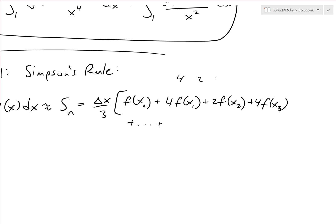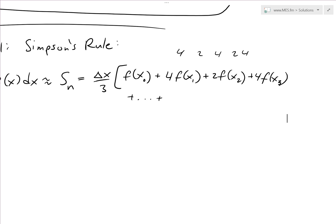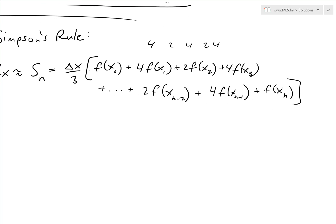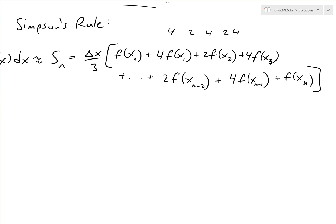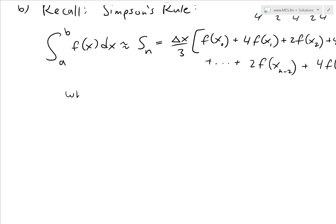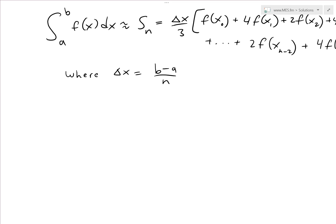So it was 4, 2, 4, 2, 4, 2, etc. It keeps going on and on. So we finally have f(x_{n-2}), plus 4 f(x_{n-1}). Then the last one is just f(x_n). So the first ones are 1 as coefficients. Then we have 4, 2, 4, 2, 4, 2. And then we get 1 at the last one as well. And again, where delta x is equal to B minus A divided by n. So it's just equal width subinterval.